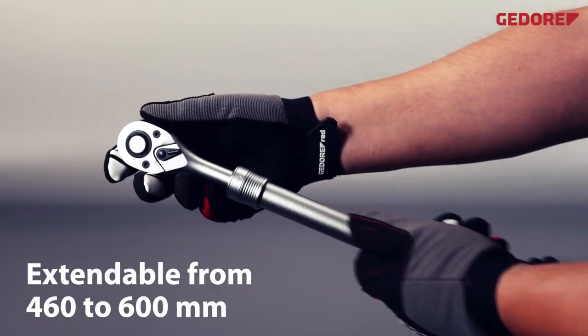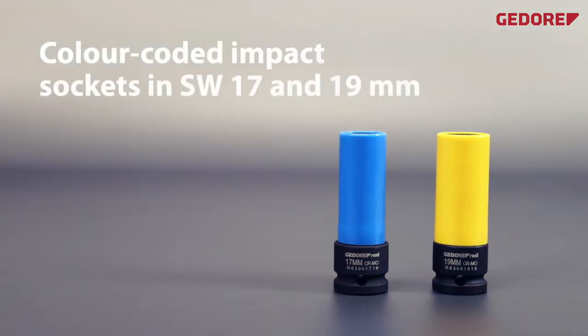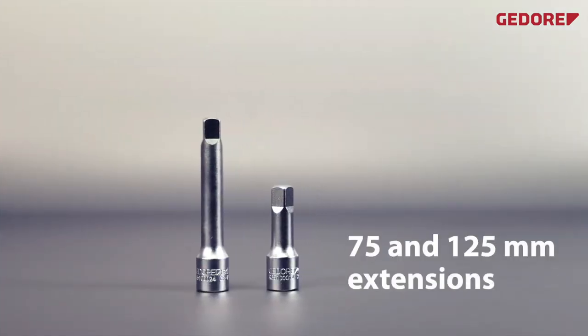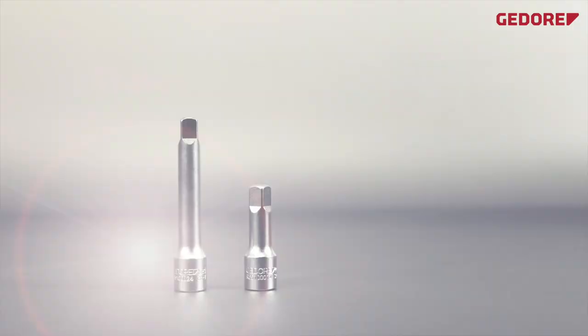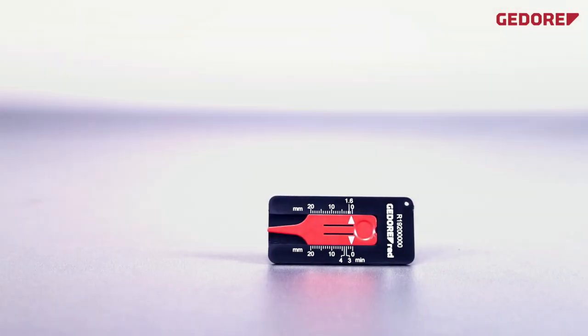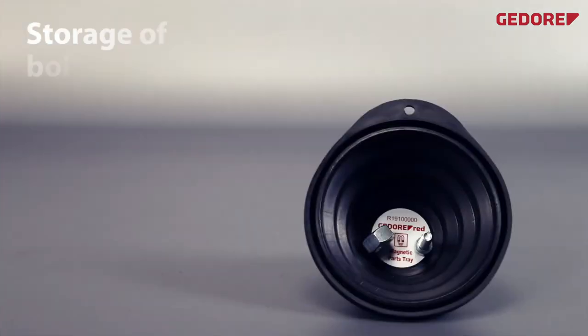The two color-coded impact wrench sockets with SW 17 and 19 fit common wheel bolts and nuts and are designed for use on impact wrenches. The torque spanner with a torque range of 40 to 200 Nm is designed for cars and vans and scores with an adjusted accuracy of plus or minus 3%.